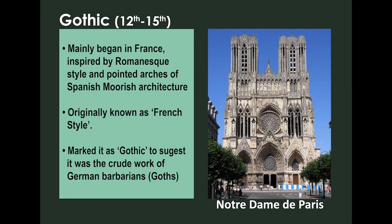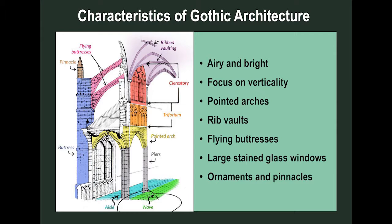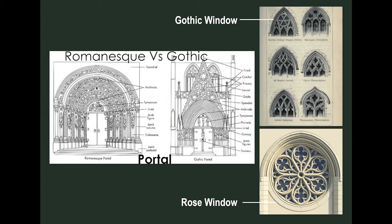Gothic is a style that flourished in Europe during the High and Late Middle Ages. It evolved from Romanesque architecture and was succeeded by Renaissance architecture. Originating in 12th century France, it was widely used especially for cathedrals and churches until the 16th century. Its most prominent features included the use of the roof vault and the flying buttress, which allowed the weight of the roof to be counterbalanced by buttresses outside of the building, giving greater height and more space for windows. Another important feature was the extensive use of stained glass and high-rise windows, bringing light and colour to the interior.